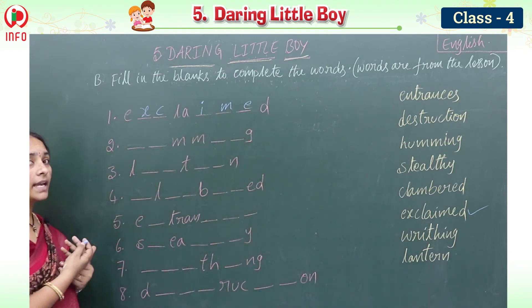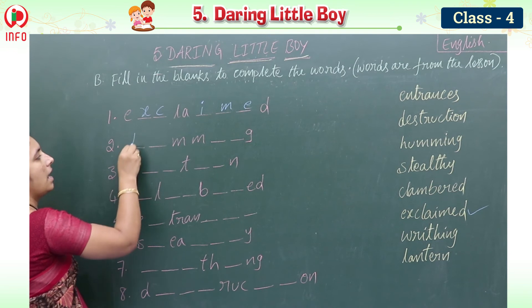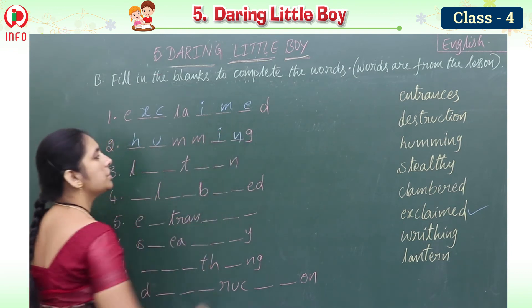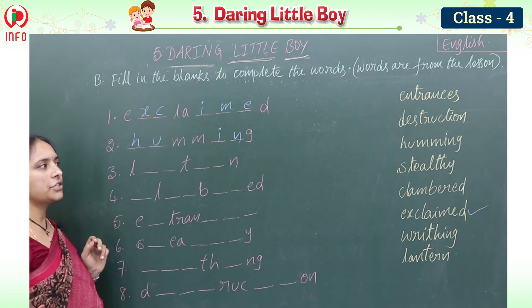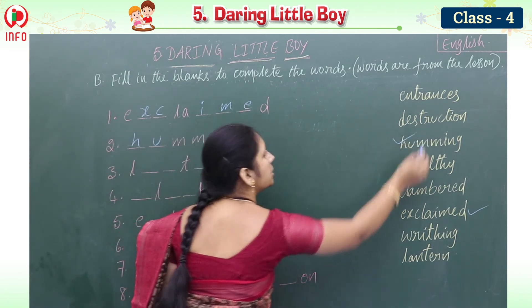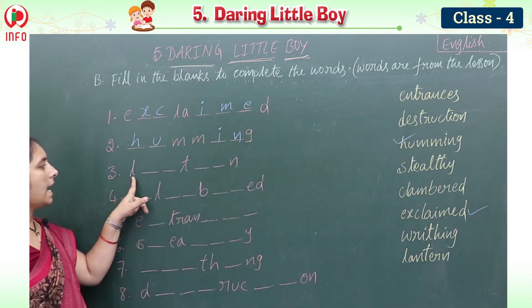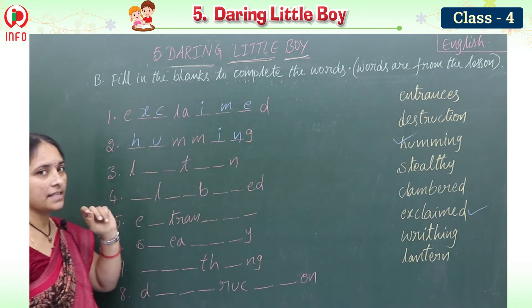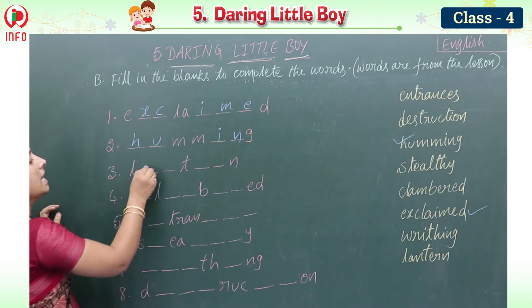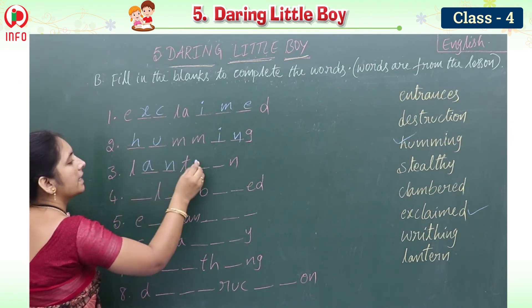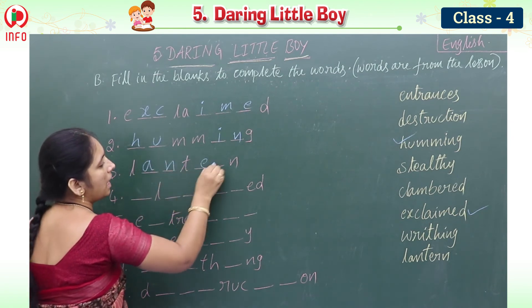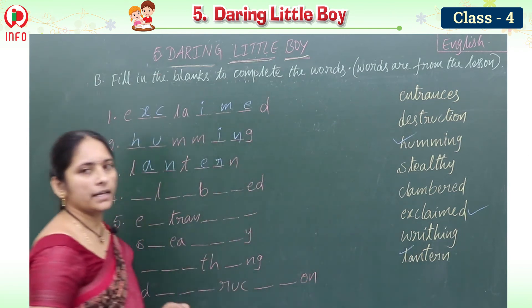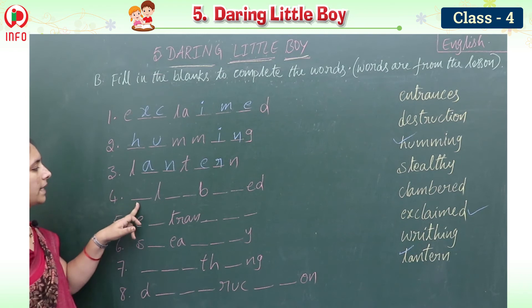Next: he went humming his songs, so the word is humming — H-U-M-M-I-N-G. Then L _ _ T _ N is lantern — L-A-N-T-E-R-N.